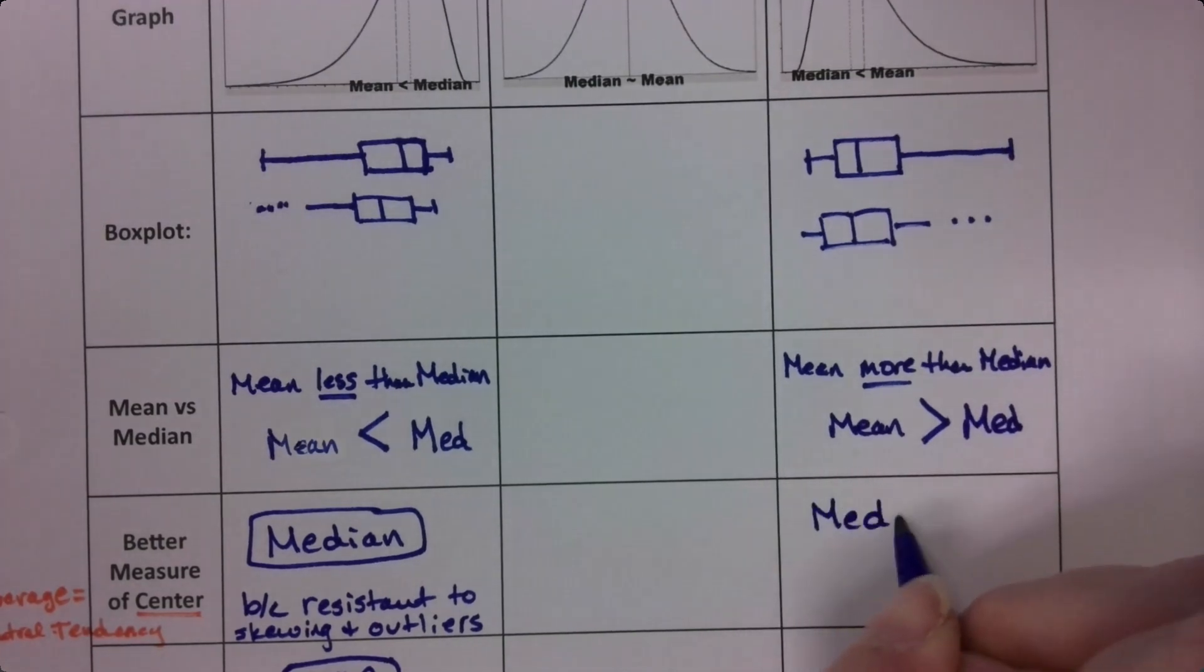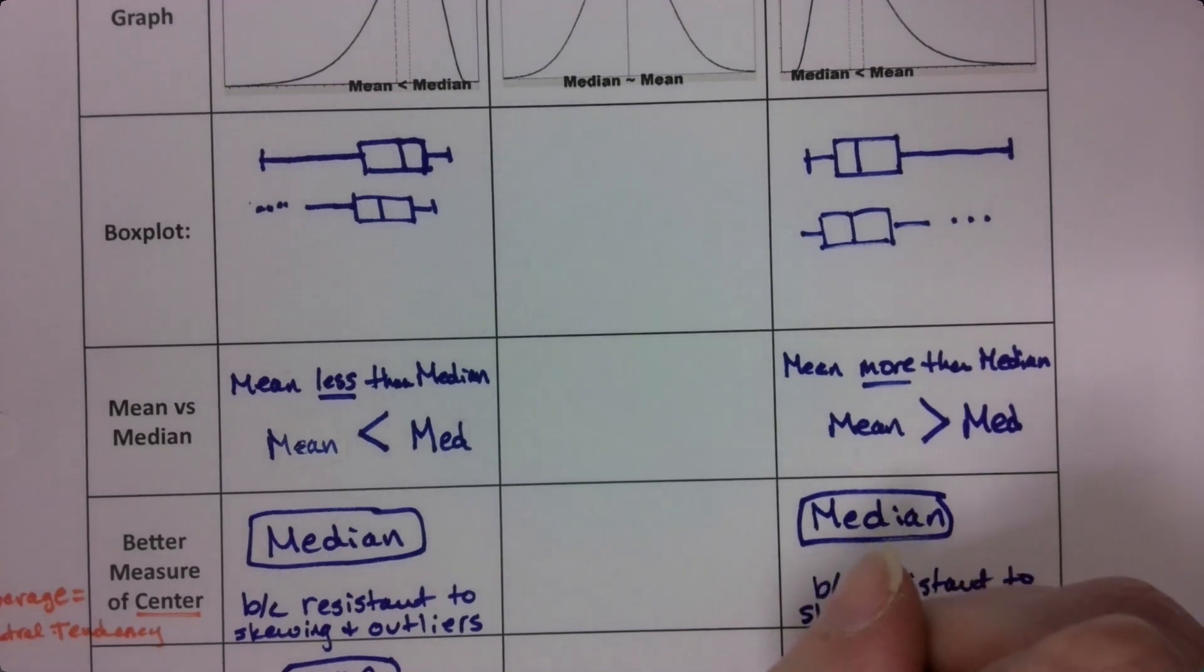So again, the median is the better measure of center because it's resistant. See what I wrote on the left? To skewing and outliers.